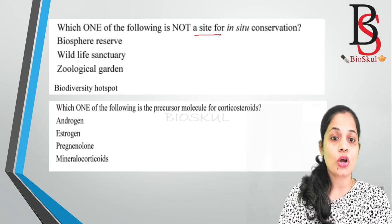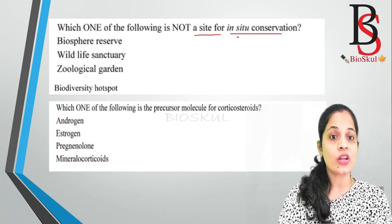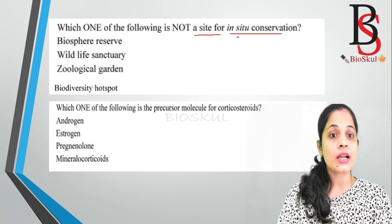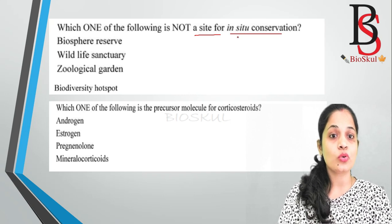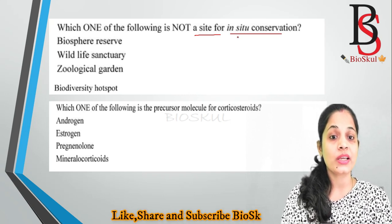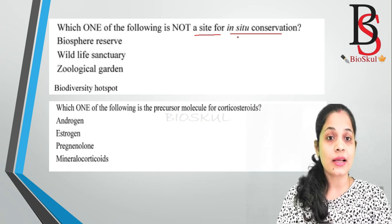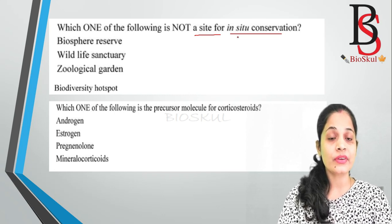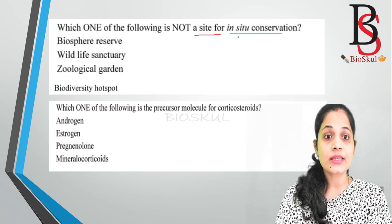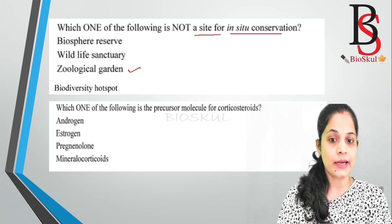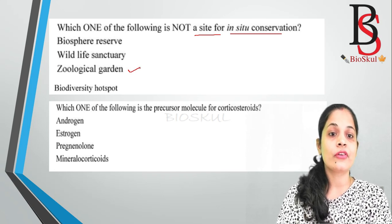Question three: which one of the following is not a site for in-situ conservation? In-situ means on-site — animals conserved in their original place. The question asks which option is not in-situ, meaning it is asking about ex-situ conservation, where animals are found in an artificial environment made by humans. Examples of ex-situ conservation include zoological gardens and botanical gardens. The correct option is the zoological garden, as it is not a site for in-situ conservation.